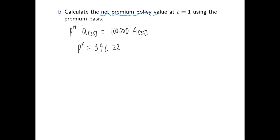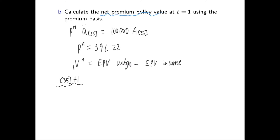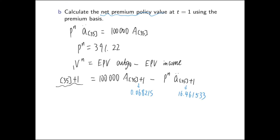Now let's look at the net premium policy value at time one. It is the expected present value of benefit outgo subtract the expected present value of premium income. At time one, this person selected one year ago at age 35 is now age 36. Standing at this point, the expected present value for the life insurance benefit is 100,000 times the life insurance value for a person now aged 36. As for the premium income, it is Pn times the annuity due at age 36 selected one year ago.